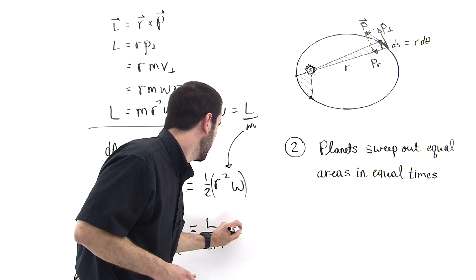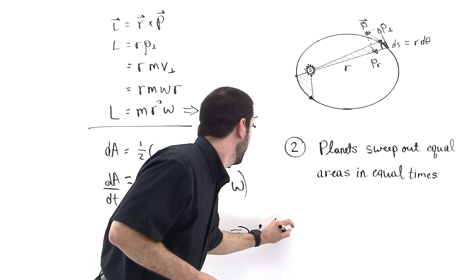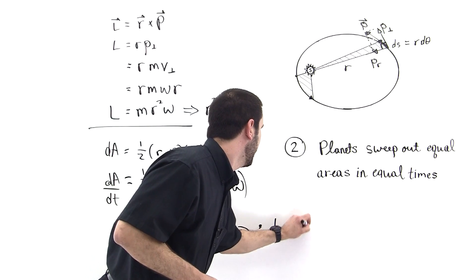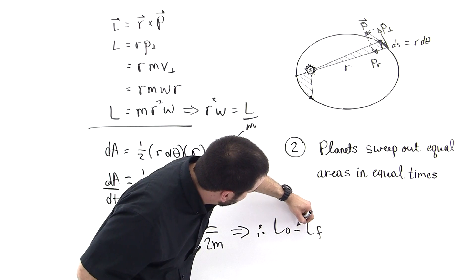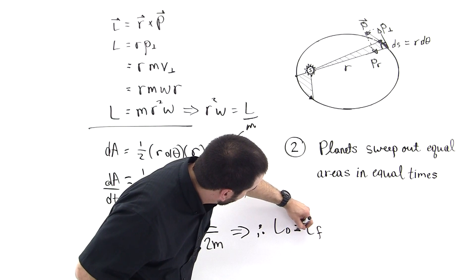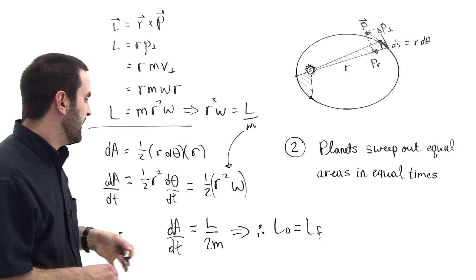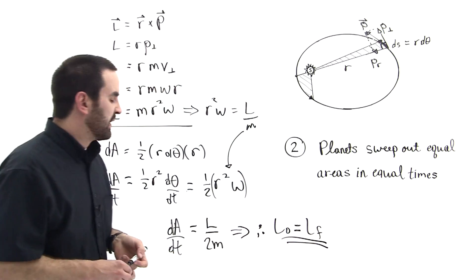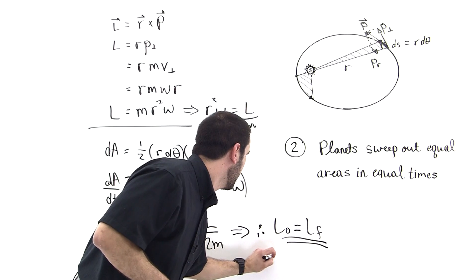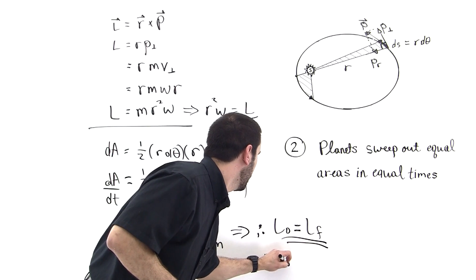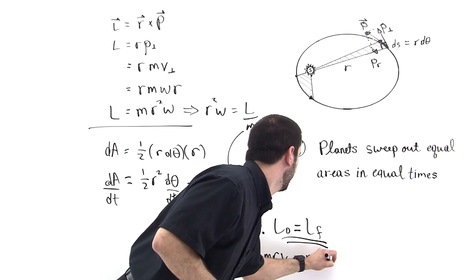So the conclusion was that L-naught must always be equal to L-final, unless there's some outside force acting, which there's not. There's only the force of the planet acting centrally, it's a central force problem. And this result will be useful because you can say, with this result, you can say m r-naught v-naught is equal to m r-final v-final.